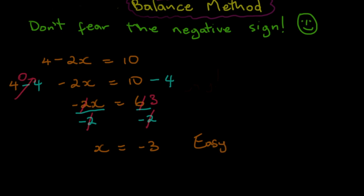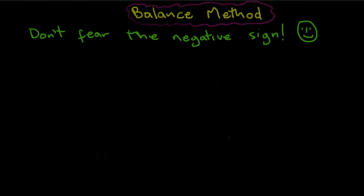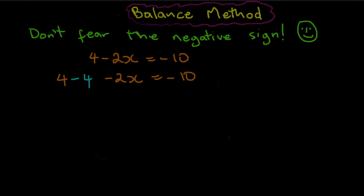Let's do one more problem. Let's say we have 4 minus 2x is equal to minus 10. We're going to subtract 4 from both sides and put back the minus 2x. That's equal to minus 10, and we also take away 4 from this side. 4 minus 4 is 0, so we're left with minus 2x. Now, if I owe 10 and then I owe 4 more, I owe altogether 14, so minus 2x equals minus 14.